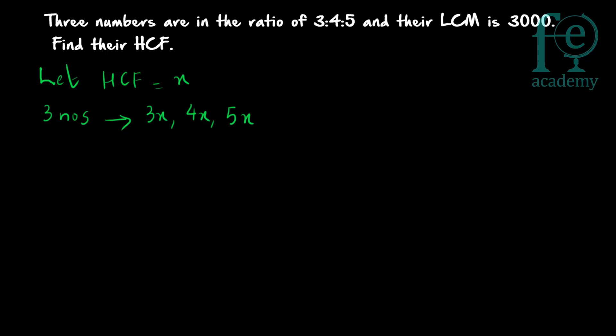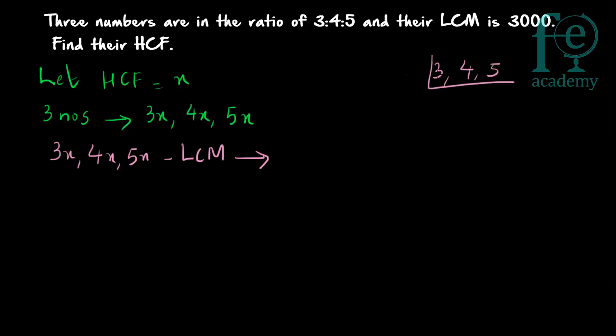And their LCM is 3000. So what is the LCM of 3x, 4x, and 5x? The LCM of 3x, 4x, and 5x — you take the LCM of 3, 4, and 5. There are no common factors, so it is 4 × 3 × 5. That gives 4 × 3 = 12, and 12 × 5 = 60. So the LCM of 3x, 4x, and 5x is equal to 60x.